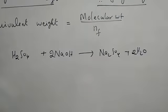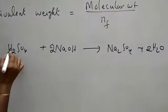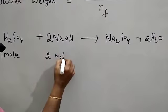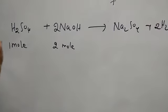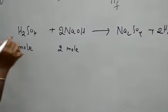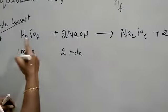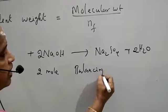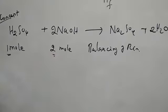What information does this chemical reaction give? Based on the mole concept, 1 mole of sulphuric acid reacts with 2 moles of sodium hydroxide to give the product. Regarding the mole concept, balancing of the reaction is important. Here it indicates 1 mole reacting with 2 moles.